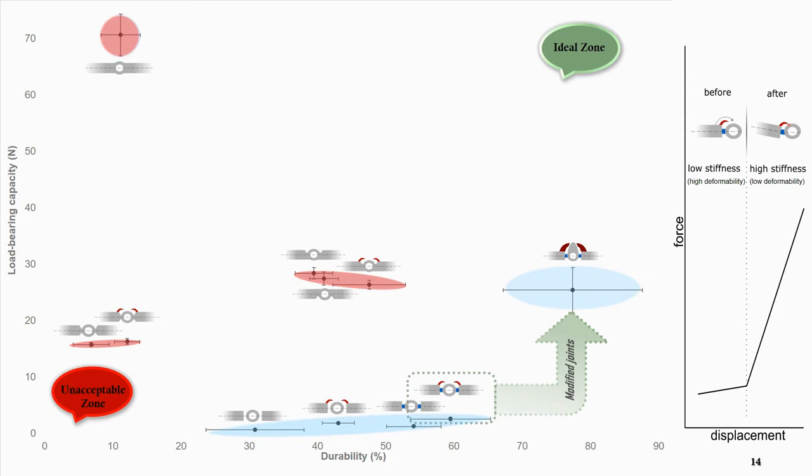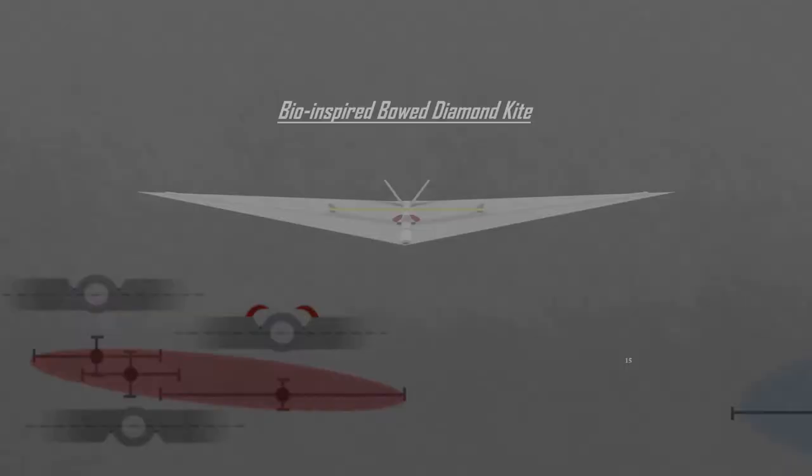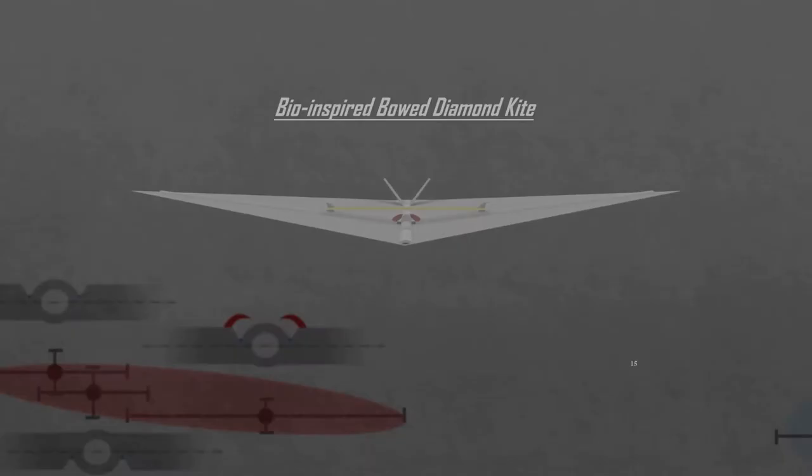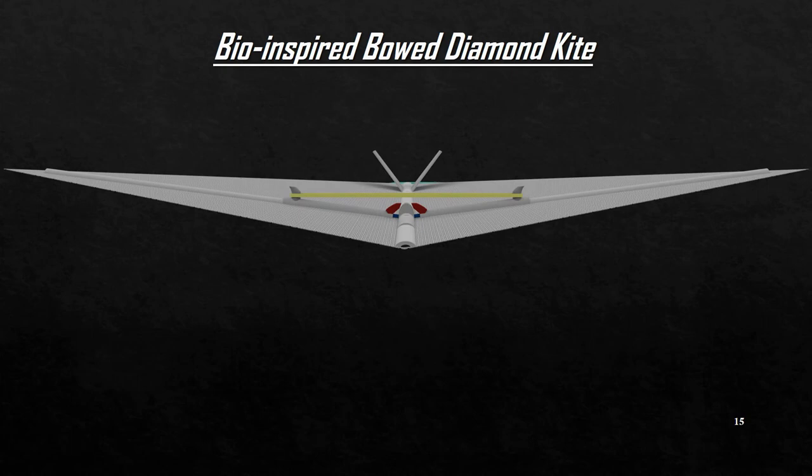In order to see the application of our bio-inspired joints in practice, we implemented our 3D printed joints, in particular the modified joint, into the design of a diamond kite, which was aimed to fly in strong winds without failure.